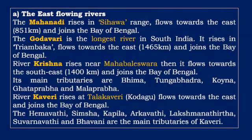East flowing rivers. The Mahanadi rises in the Sivaha range and flows towards the east, joining the Bay of Bengal. The Godavari is the longest river in South India; it rises in Triyambaka and flows 1465 km eastward to join the Bay of Bengal. River Krishna rises near Mahabaleshwara, flows towards the south-east and joins the Bay of Bengal. The main tributaries of river Krishna are Bhima, Tungabhadra, Koina, Ghataprabha and Malaprabha.